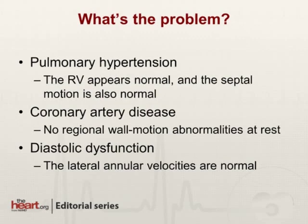Pulmonary hypertension would be unlikely from the 2D images that I showed you. The right ventricle appears structurally normal, the septal motion is normal, so there's nothing to suggest any overload on the right side of the heart. As for coronary artery disease, at least in the resting study, there are no regional wall-motion abnormalities. You'll also notice that the mitral inflow and the tissue Doppler of the mitral annulus are all normal, suggesting that there's no reason for this patient to have any premature stiffening of the left ventricle.